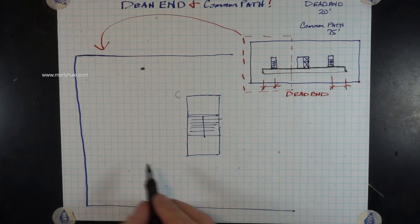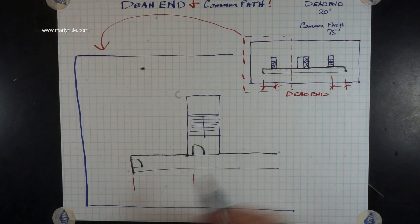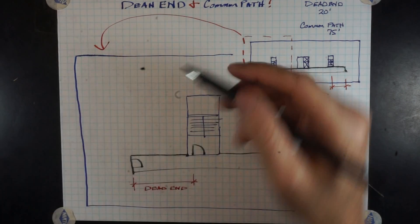So to better help illustrate this situation, let's look at this area blown up in a little bit more detail. So with our stair door and our office entry door, that distance cannot be greater than 20 feet or we have a dead-end situation.